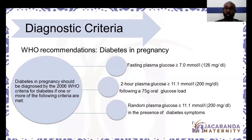If a patient is complaining of increased thirst and urination, and you do a random plasma glucose which is 11.1 or above in the presence of those diabetic symptoms, that would be diagnostic of diabetes in pregnancy.